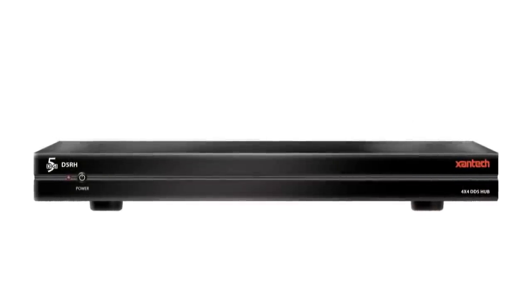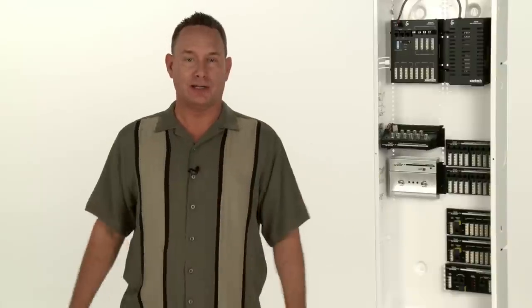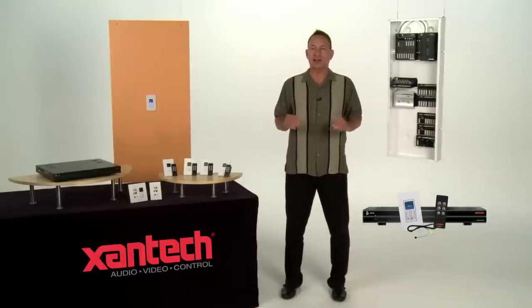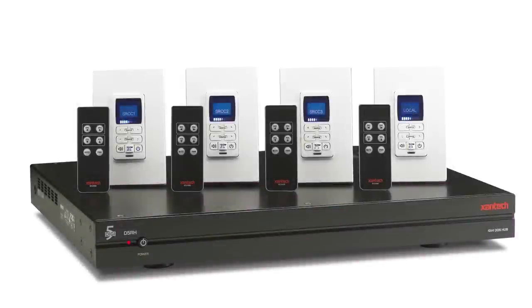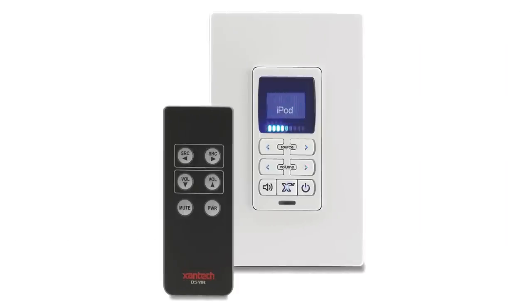The DDS hub comes in either the convenient rack mount version or in a wall mount version for installation in a structured wiring enclosure. Both the rack mount and wall mount hubs are available in a DDS kit that includes everything you need for a complete four-source, four-zone all-digital multi-room audio system, including IR accessories and mini remotes for complete source control from each zone.